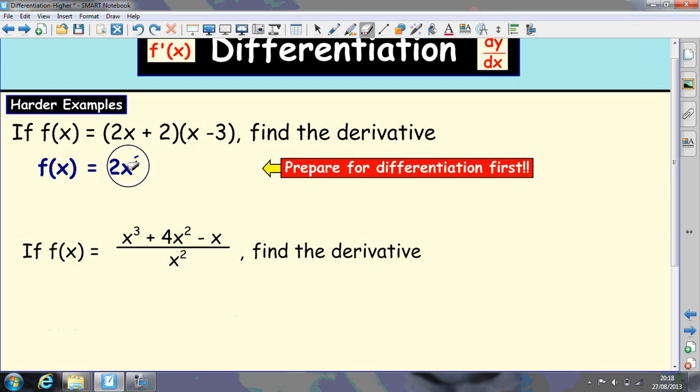2x times x is 2x². Then you're going to have a 2x and a -6x, which gives you -4x. You can take longer to do this, I've just done it quickly here. And you've got 2 times -3, which is -6. Now I can differentiate, multiply down, reduce by 1, and then -4 here.